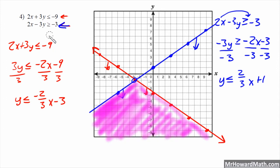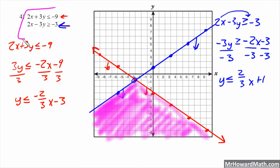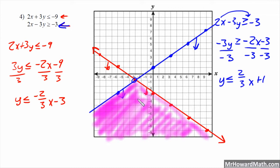Any ordered pair in that shaded zone, or on this section of the blue line, or this section of the red line, would satisfy both linear inequalities. The solutions to this linear system of inequalities lie in the shaded zone or on the valid sections of each line.